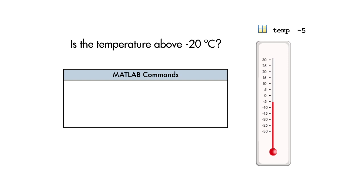Now, we need to determine if the current temperature is above negative 20 degrees Celsius. This time, we use the relational operator greater than. Looking at the values stored in temp, can you guess the result? If you guessed 1 corresponding to true, you got it right.